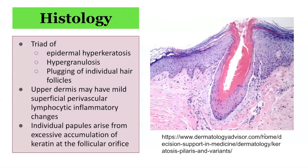A punch biopsy is not usually indicated or necessary to make a diagnosis of keratosis pilaris. However, if it is done, the histology would display the following features: marked follicular plugging of the hair follicle orifice with hyperkeratosis, hypergranulosis, and acanthosis of the epidermis. There may be some lymphocytic infiltrate of the epidermis, and hypergranulosis may also be present.